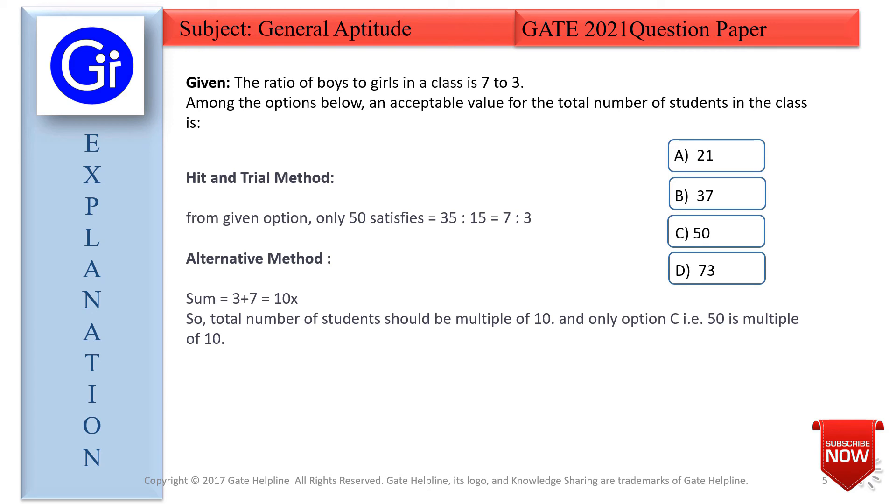The first method is hit and trial, which you can do in the exam if you don't know elementary mathematics. The alternate method is the formula-based standard method.